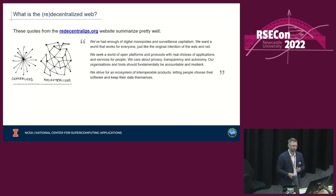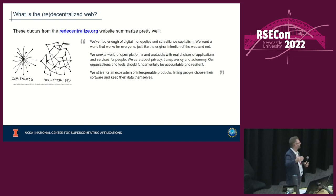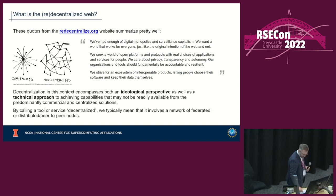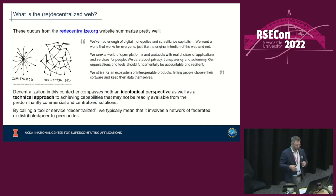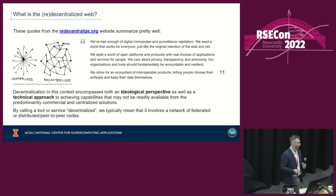When it was not so constrained by the walled gardens of companies like Facebook and Google. We seek a world of open platforms and protocols with real choices of applications and services. We care about privacy, transparency, and autonomy, and our organizations and tools should be fundamentally accountable and resilient. Decentralization encompasses both an ideological perspective and a technical approach — typically involving a network of federated servers or a distributed peer-to-peer network — to achieve capabilities not found in predominantly centralized commercial solutions.